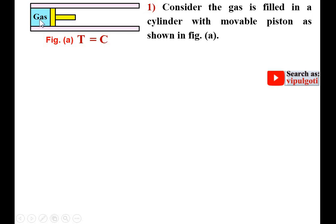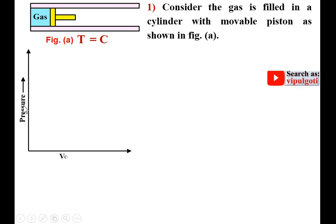If I want to show the initial position of the gas on a PV diagram — that is a pressure versus volume diagram — pressure is always on the y-axis and volume is always on the x-axis. This is the initial state of the gas, let us say state 1, with corresponding pressure P1 and corresponding volume V1.